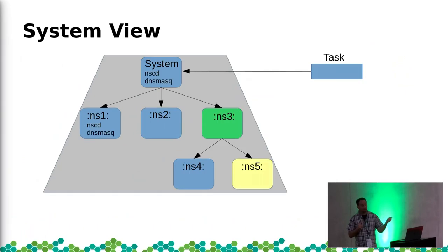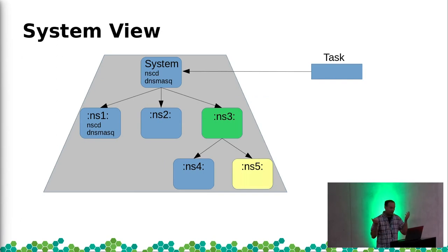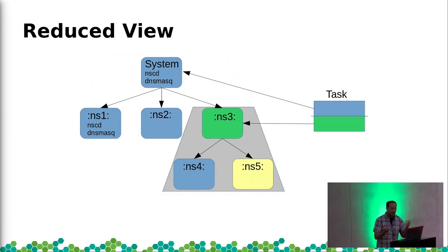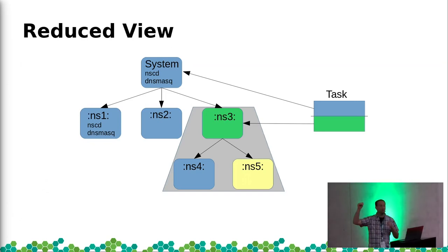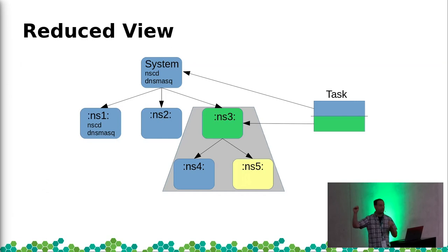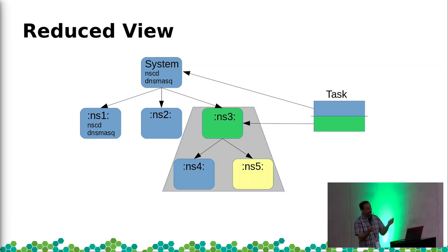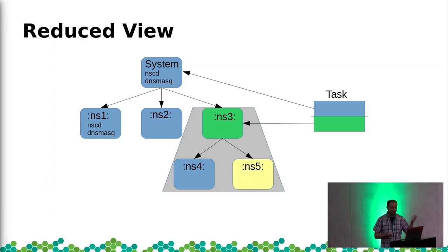So where is stacking useful? If we look at namespaces again: we have a task in the system namespace. If we now add a stack so that we're stacking a system namespace profile and a profile from namespace 3 to the task, what happens is the task is now limited to the view of namespace 3, but both the system namespace policy and namespace 3 policies are being applied against this task. The task can't see the system policy.